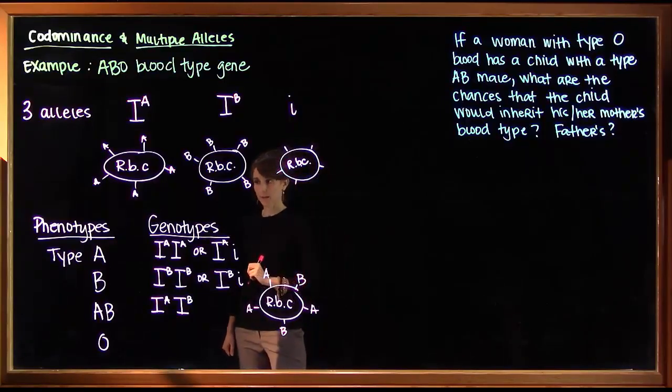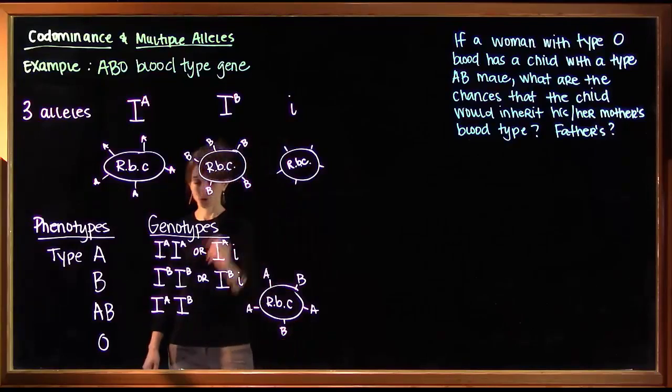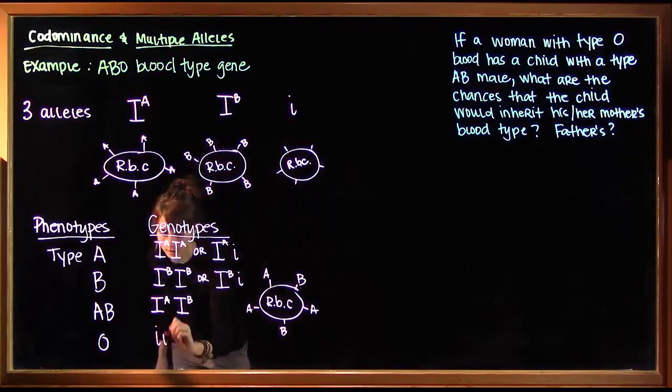And then our last possibility, a person with type O blood has two recessive alleles.